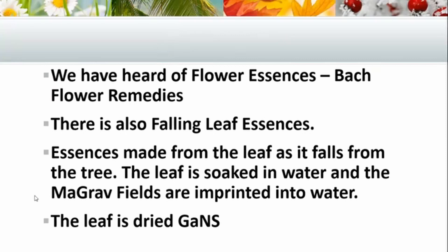To bring in some other aspects of our understanding: many of you have heard of the flower essences — those Bach flower remedies. There's also what they call a falling leaf essence, developed by an Australian chap whose book we have read. What he does is make essences of the different trees, different leaves as they fall from the tree. He just soaks this leaf in water and the MaGRA fields are imprinted into the water. As we know, the leaf is dried GANS, and so all these leaves are imprinting those fields into the water — just like flower essences do the same thing. And so now we can understand, by understanding this technology, how it all fits in with different aspects of what we've all been exposed to over these years.